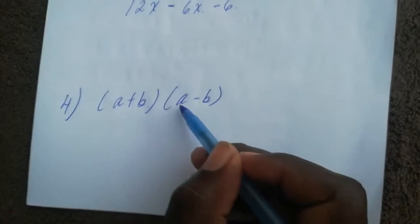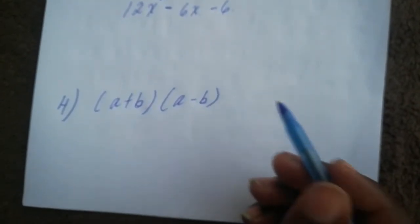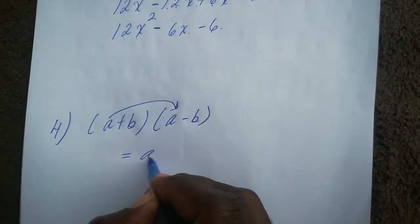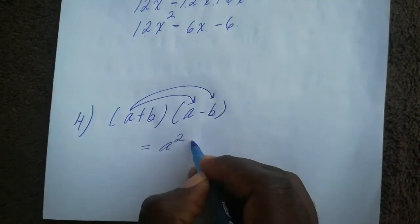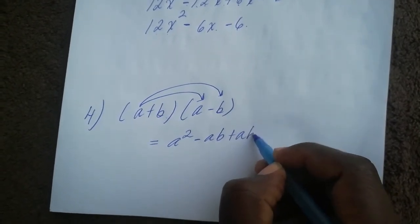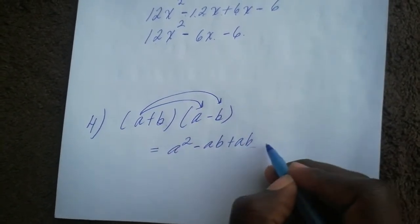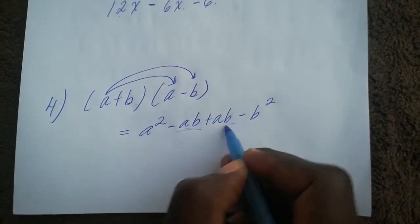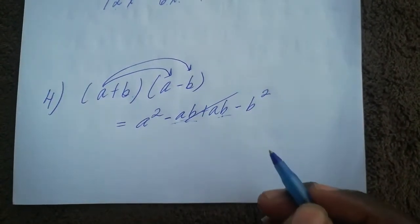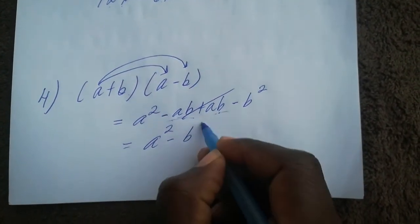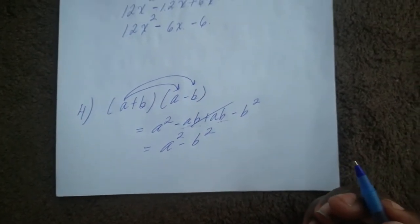The last one should look familiar: (a + b)(a − b). Multiplying it out: a times a gives a squared, a times negative b gives minus ab, b times a gives ab, and b times negative b gives minus b squared. The ab terms cancel — minus ab plus ab gives zero — leaving a squared minus b squared. Remember, if there's anything you don't understand, just leave me a comment and I'll address it.